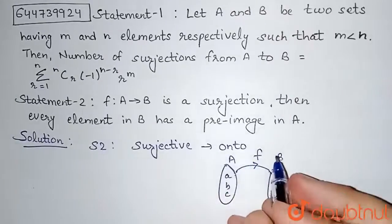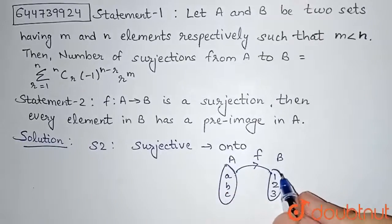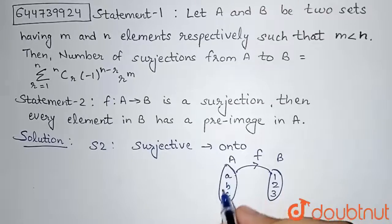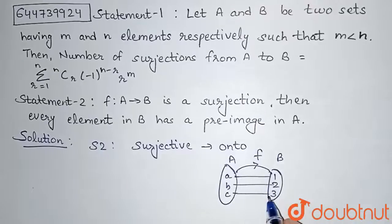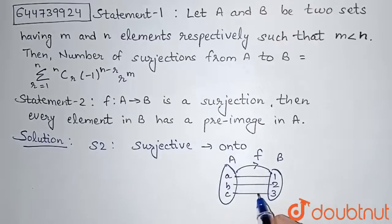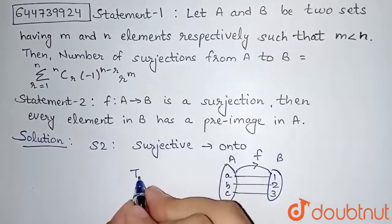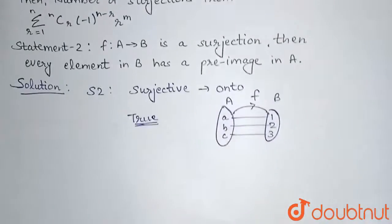So onto function will be only, this function F will be onto only if every element that is 1, 2, 3 of set B will be related to some element of A here. Let's say this is the relation here. So such kind of a function is called onto function. So according to this, statement 2 given in the question is true. So we have got that statement 2 is true here.